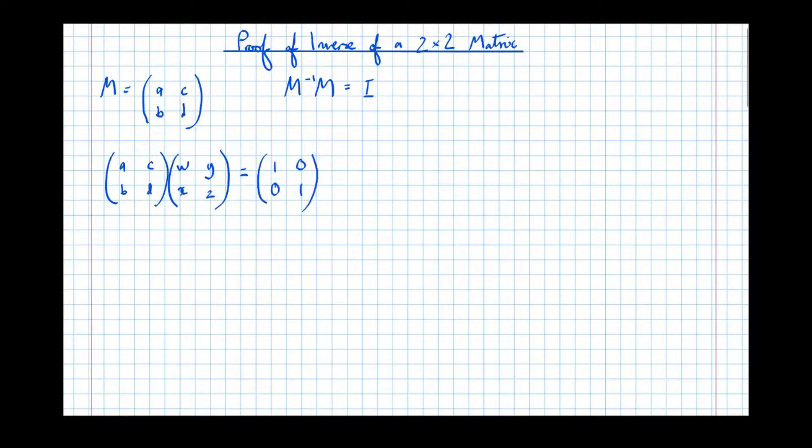And what we're trying to do here is find out what this matrix has to be to get the identity matrix, to find out what this inverse is in terms of A, B, C, and D. So let's form some equations. So let's multiply these matrices out.